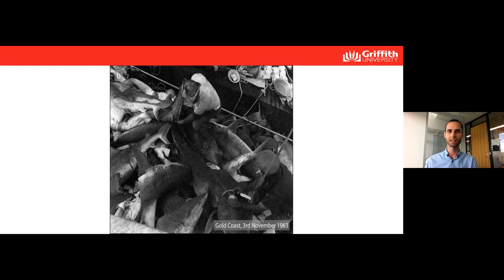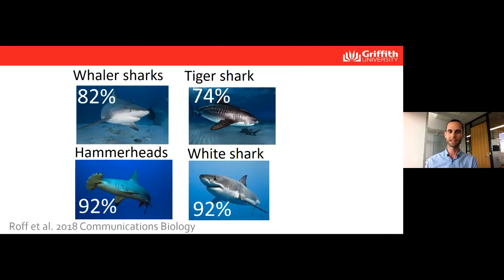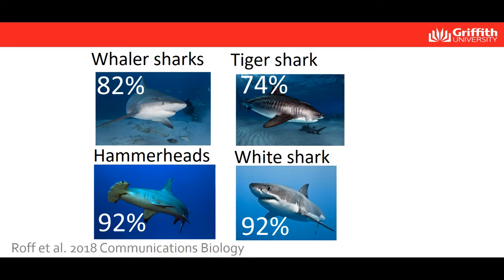Looking back to the 1960s, large sharks on Queensland's coast have been in decline — we're very far from a plague. Tiger sharks declined 74%. Hammerheads and white sharks, which include species listed as threatened, declined by a massive 92%. These declines across so many species, across such a large area, and over such a long time period suggest something is affecting all sharks, not just a few locally. I have to acknowledge my colleague George Roth, who led this shark analysis.